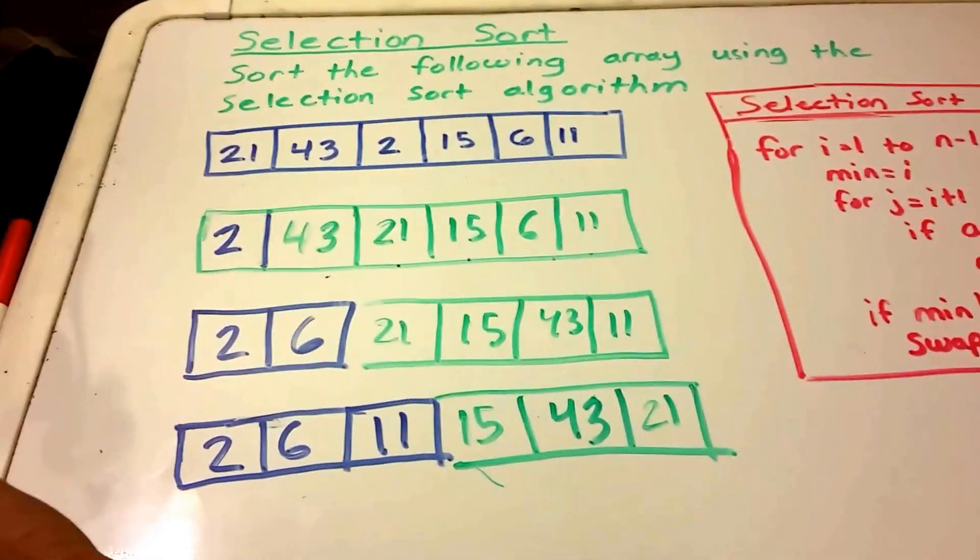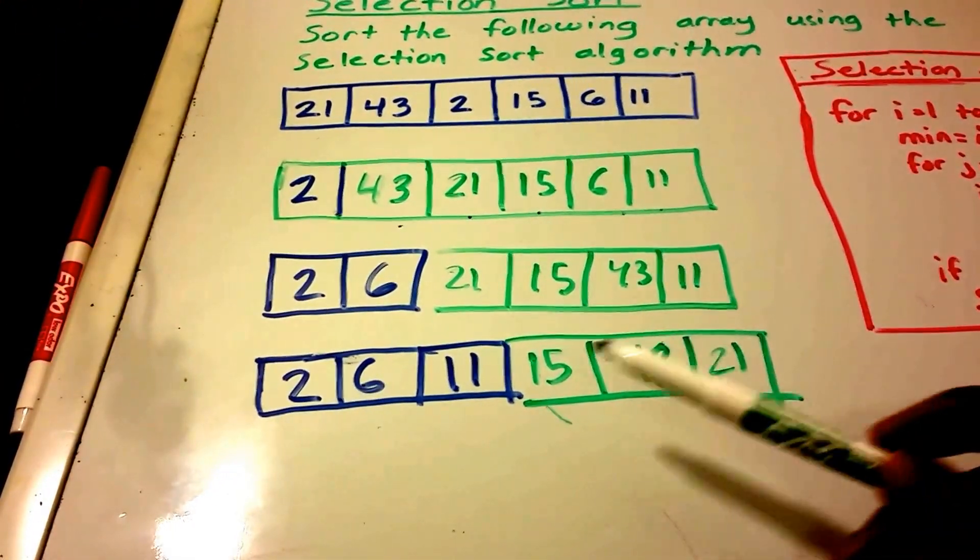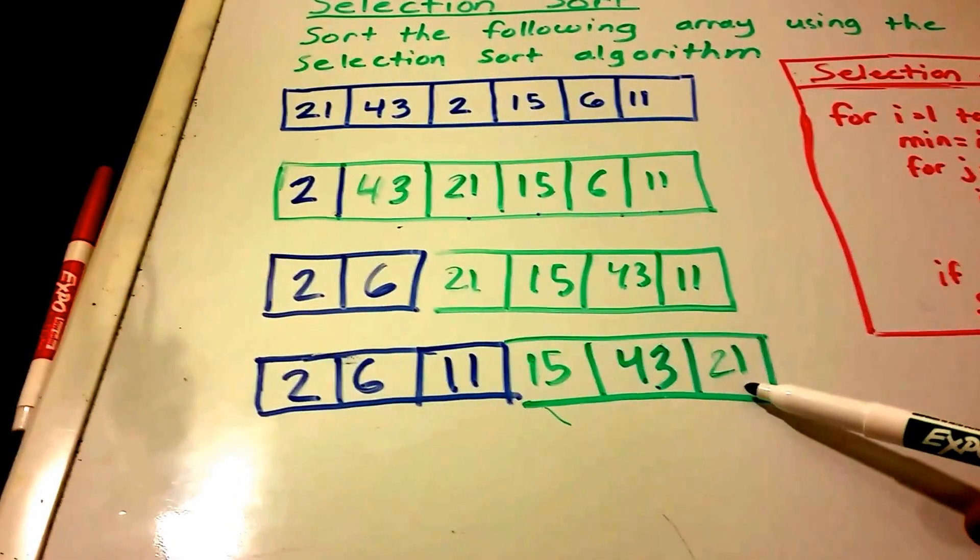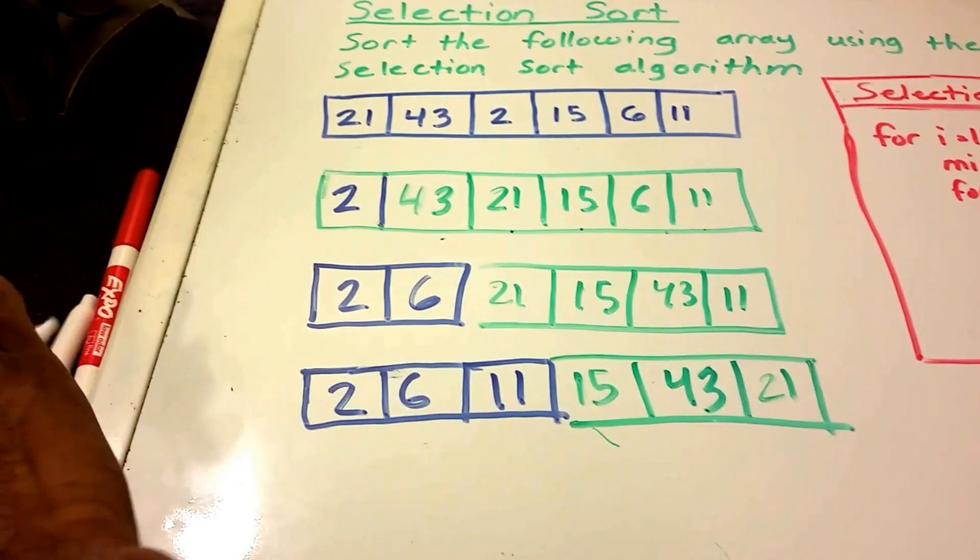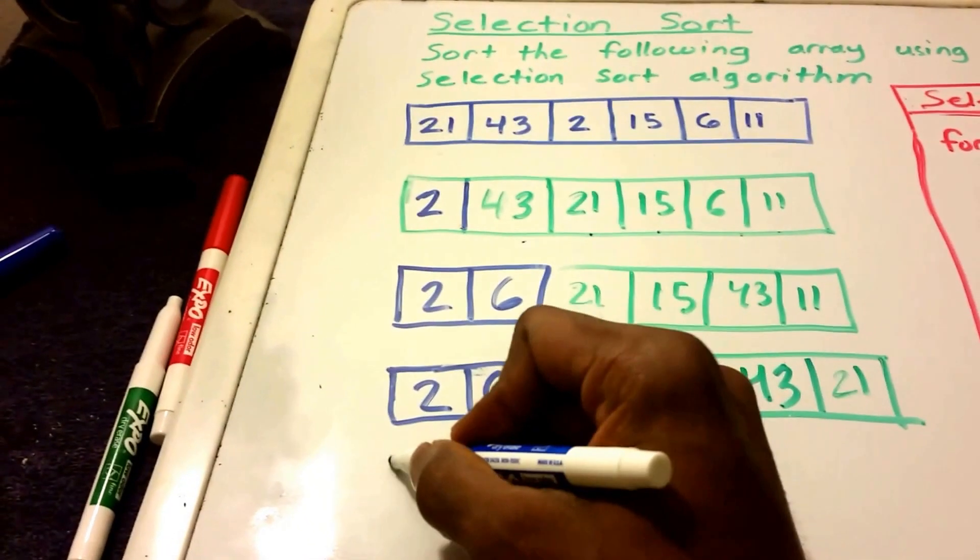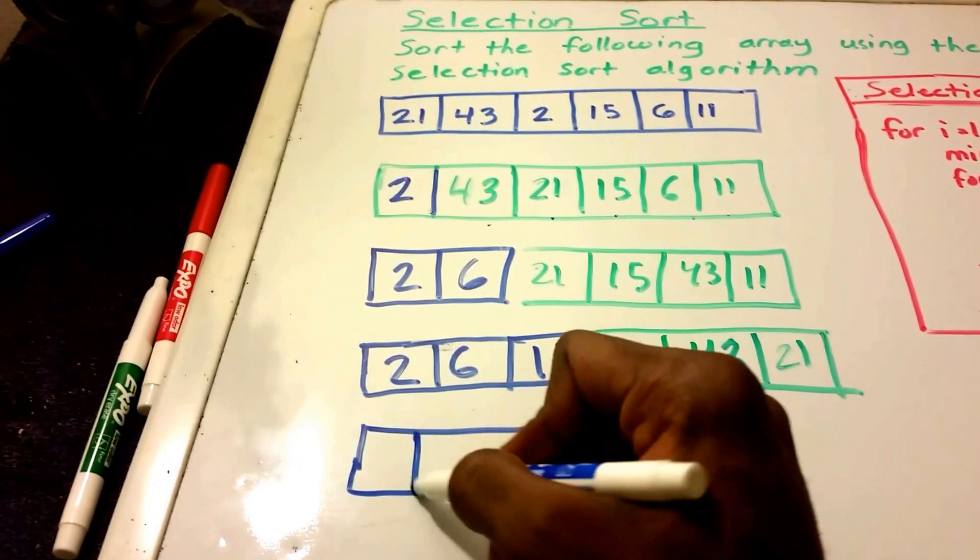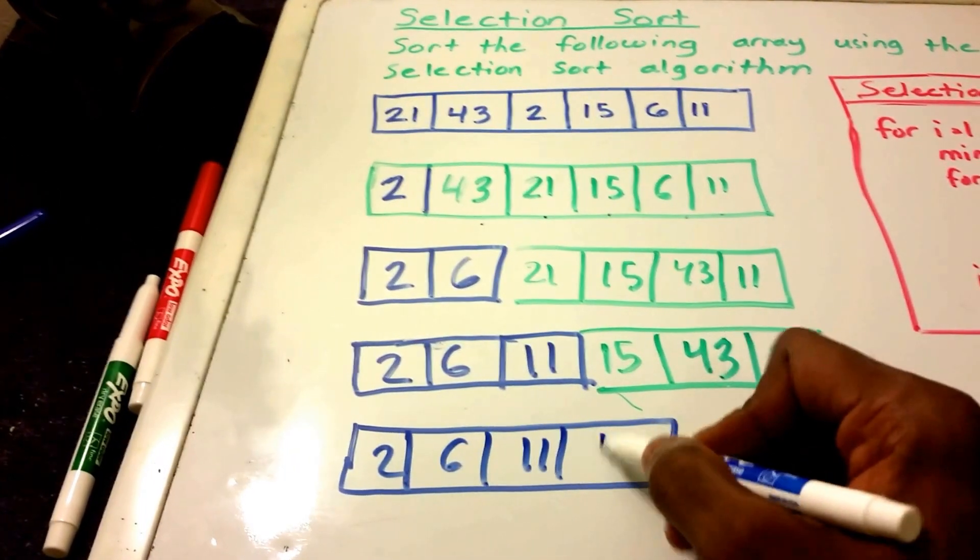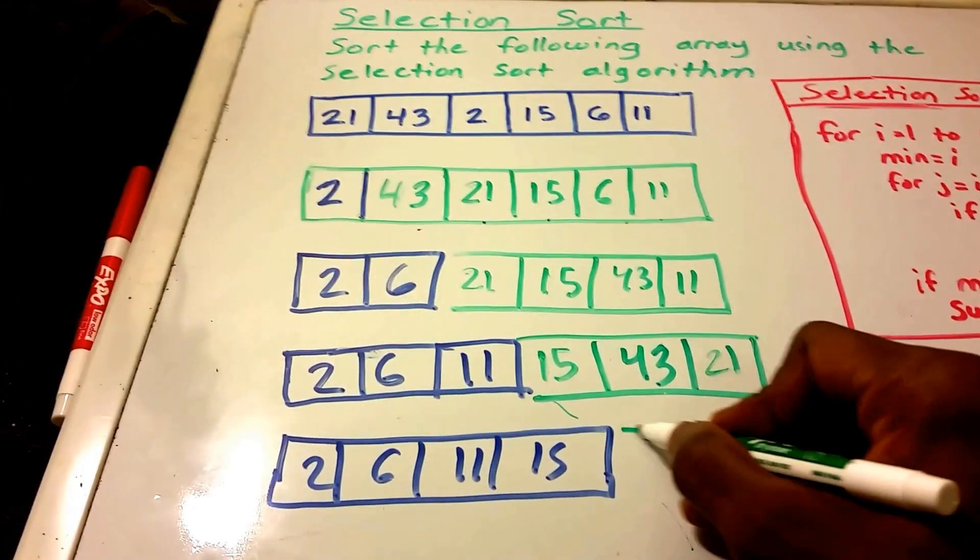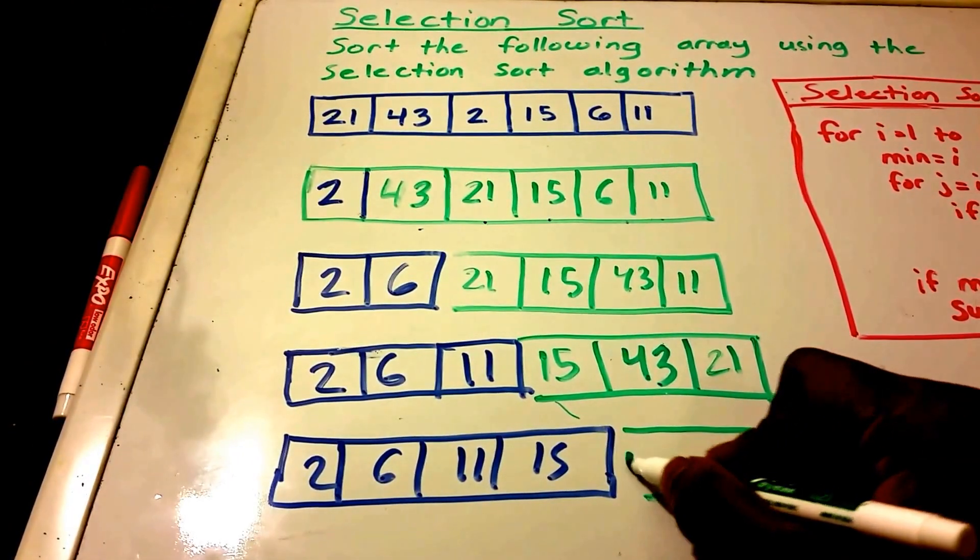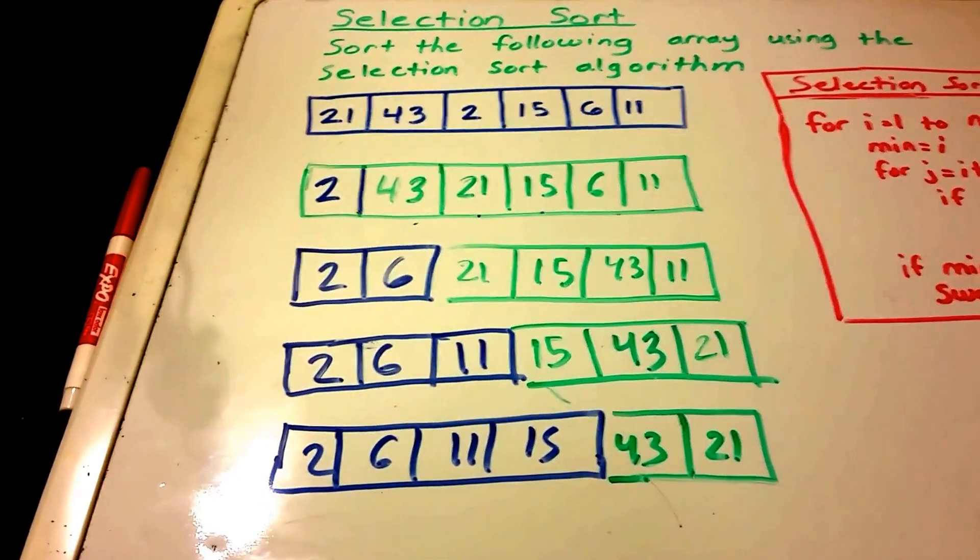So now we go to 15. We say is 15 less than 43. It is. So 15 is still our minimum. Is 15 less than 21. It is. So 15 is still our minimum. So 15 is already sorted. So we have 2, 6, 11, 15. And then we have 43 and 21. Okay.